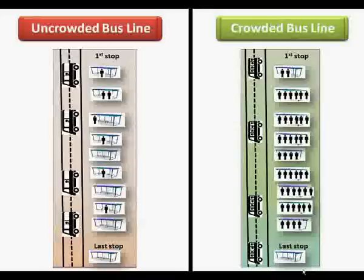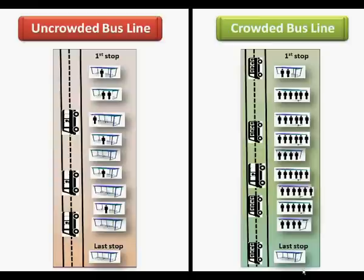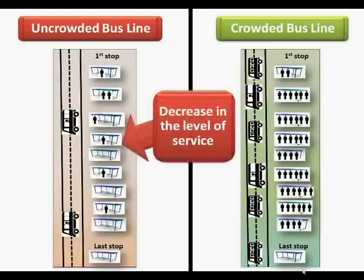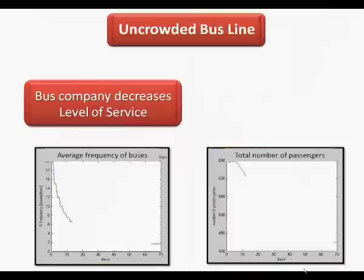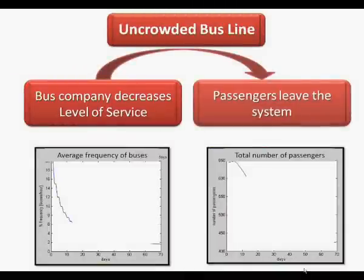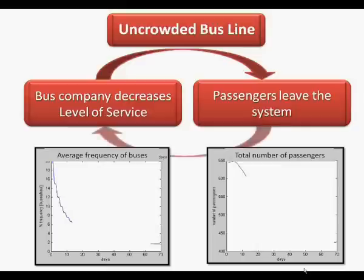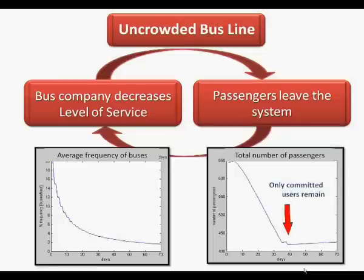In the line which initially served few passengers, fewer and fewer buses remain, which leads to a decrease in the level of service provided to the passengers. This decrease in level of service causes the few passengers that do use the system to gradually stop using it. This negative cycle stops when only captive passengers with no alternatives remain in the system.